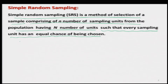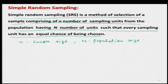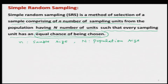Small n is our sample size and capital N is our population size — these are the total number of sampling units present. The most important aspect of simple random sampling is that all the sampling units are chosen in such a way that the probability of selection of any sampling unit is the same, and you have to execute it such that the chances of selection of any sampling unit remain the same.